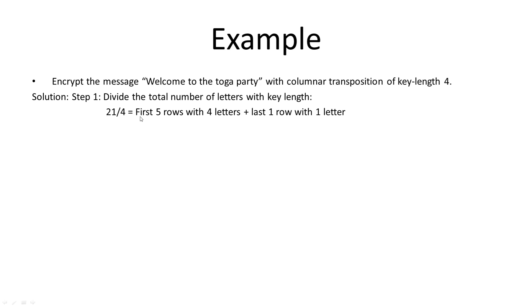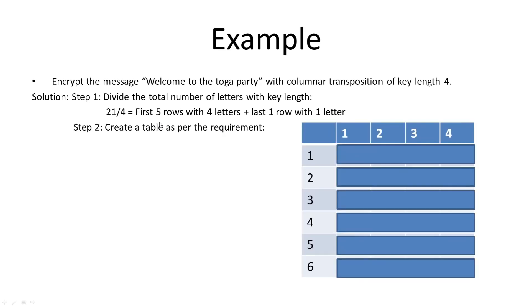We get the first five rows with four letters each, and one last row with only one letter — because 5×4 = 20, plus 1 = 21 total letters. So we create a table with six rows total: five rows with four letters and one last row with one letter, and four columns.